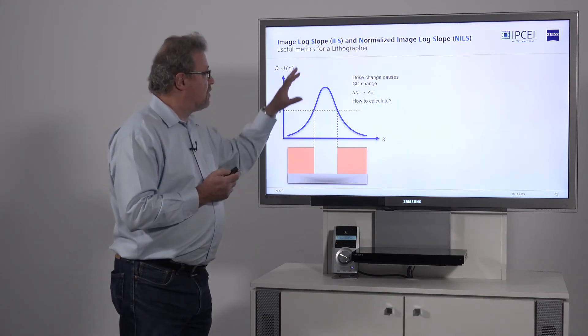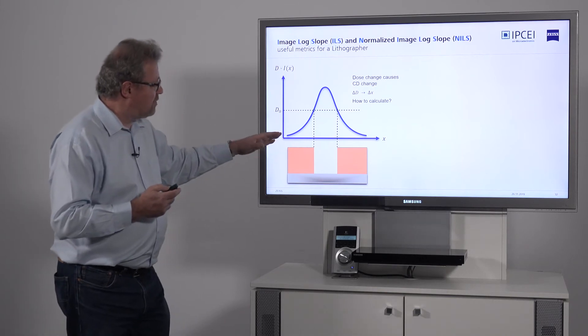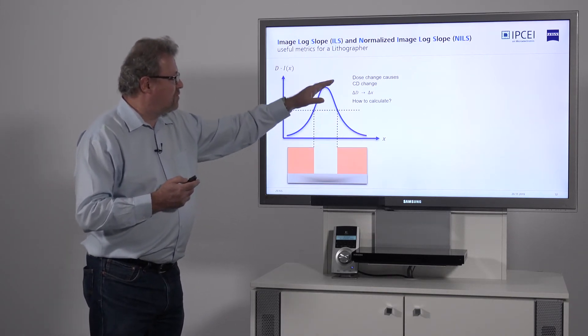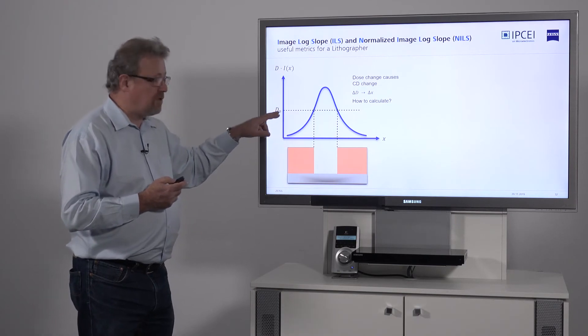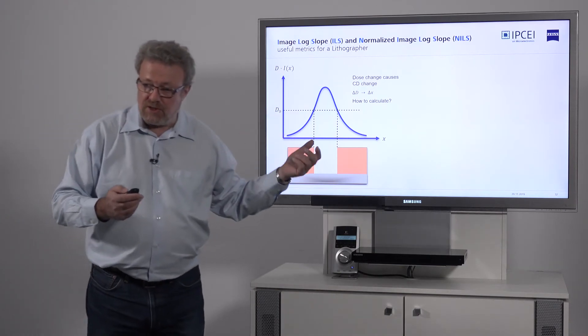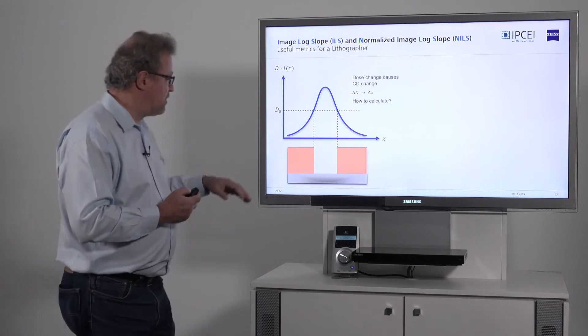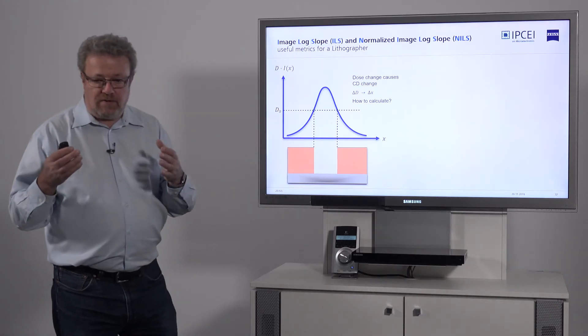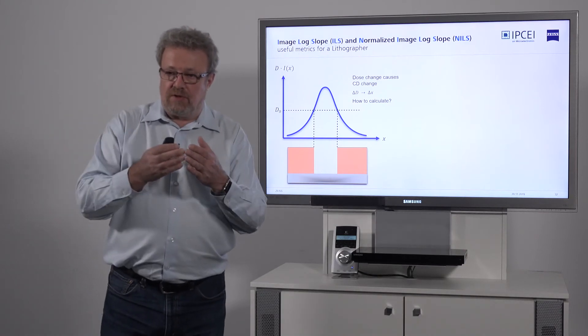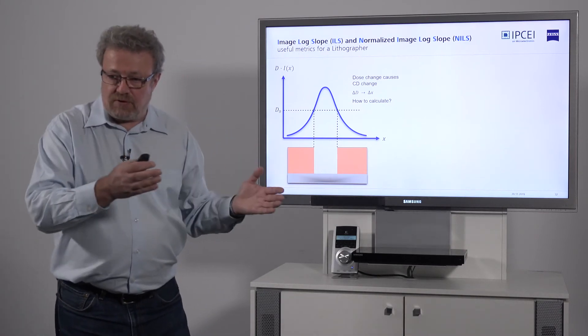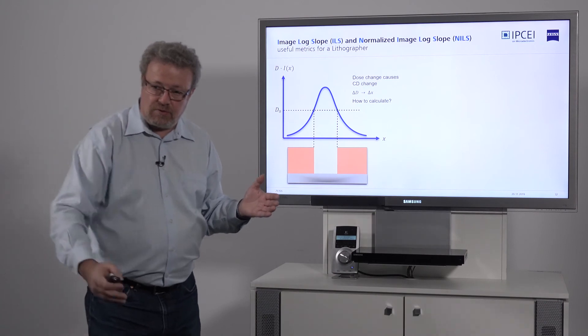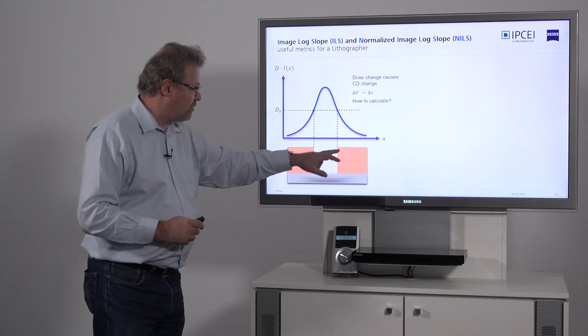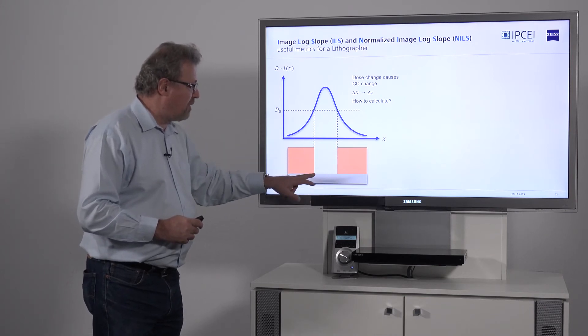In order to understand what those are, let's look at an aerial image. Here is the intensity distribution of my aerial image. As we talked about in the resist session in part one, the photoresist is very digital. It doesn't feel exposed at all for certain doses, then it has a threshold dose where you see the exposure. Where you have that threshold dose, that's where your feature will be forming.